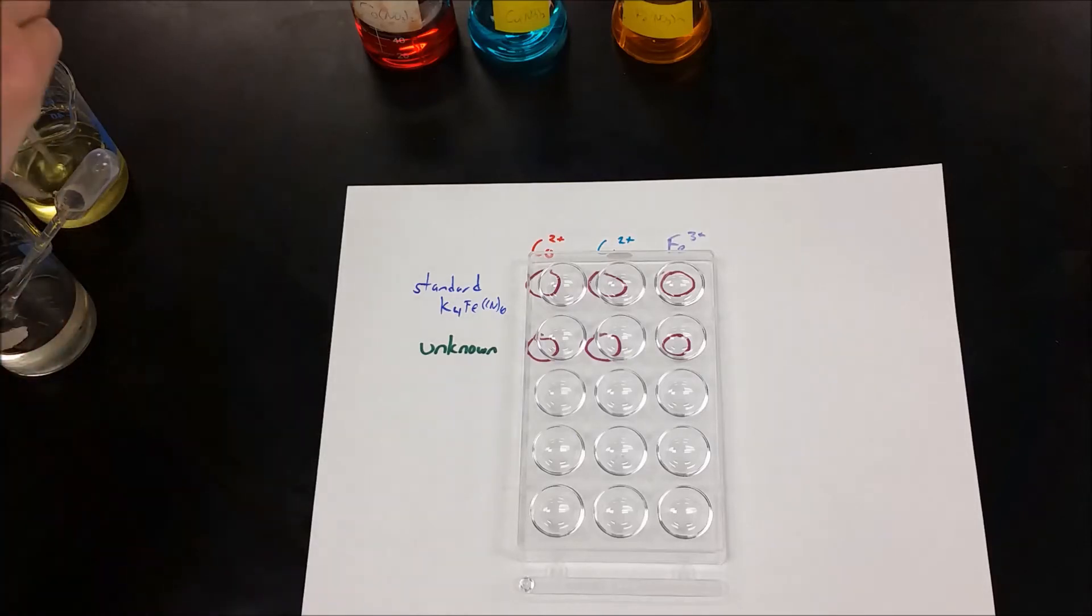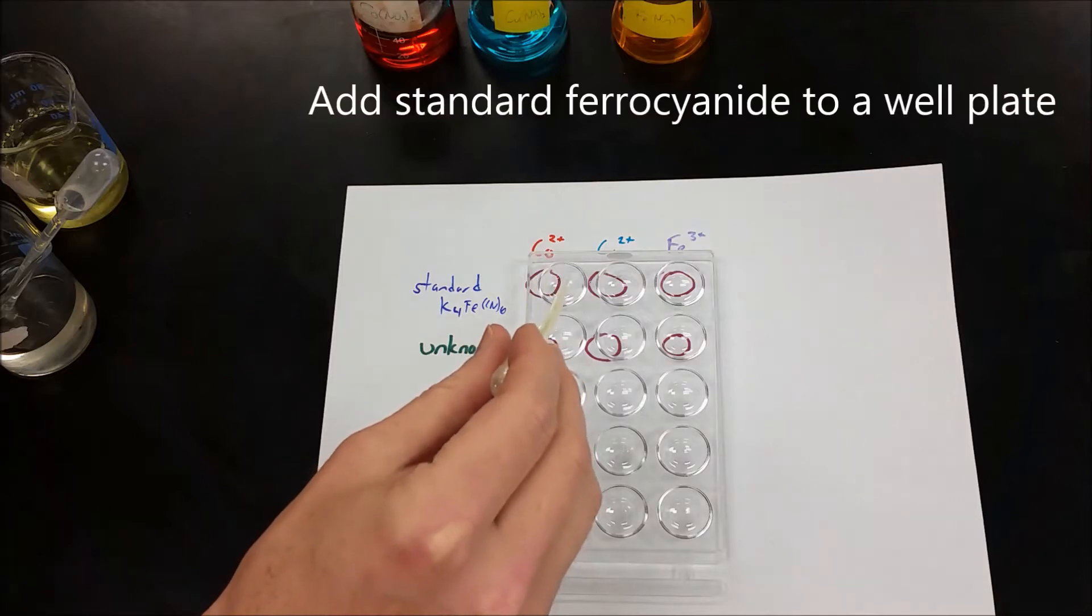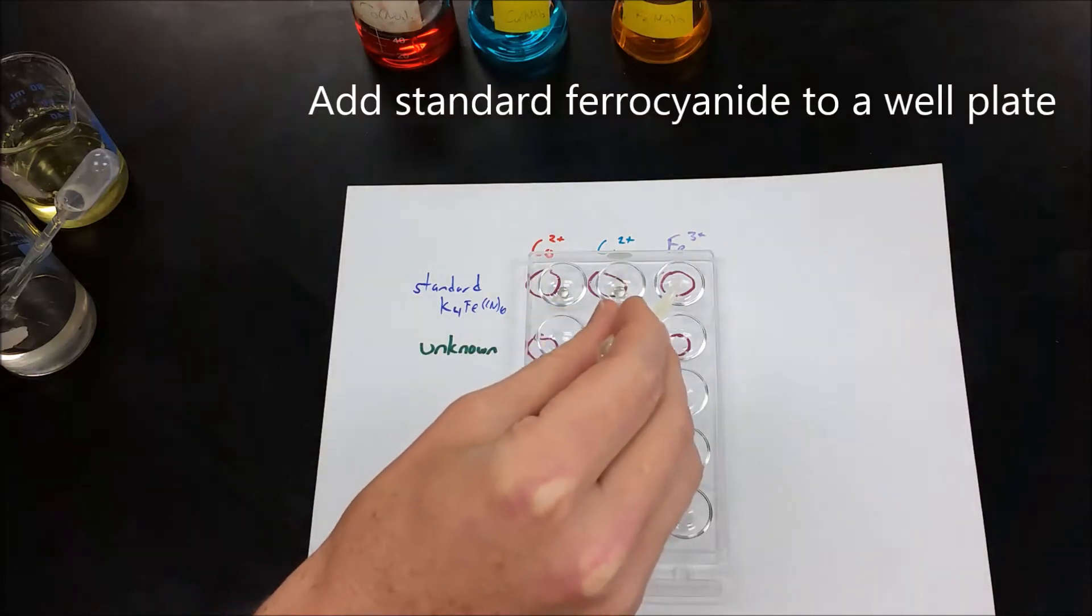For the ferrocyanide test, we would pick out any ferrocyanide, and there's only one, potassium ferrocyanide, and we would put a drop into a well plate.